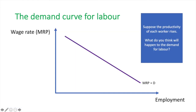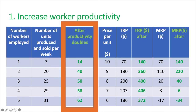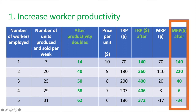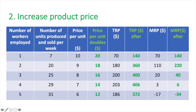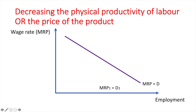Suppose the productivity of each worker rises — what do you think will happen to the demand for labour? After productivity doubles, each worker is producing twice as much in the same amount of time. Assuming the firm can sell all that it produces, the TRP also doubles, as does MRP. Similarly, if we double the price and leave productivity at its original level, we will see that TRP and MRP also double. Thus, an increase in the physical productivity of labour or the price of the product will cause MRP — or the firm's demand for labour — to increase and shift rightwards. Conversely, decreasing the physical productivity of labour or the price of the product will cause MRP or demand for labour to decrease and shift to the left.